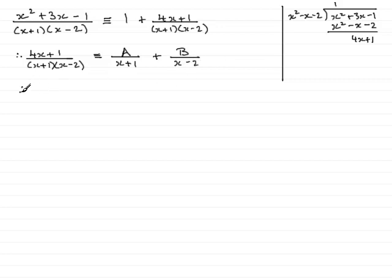And in the usual way, as we've discussed before, multiply both sides by x plus 1 times x minus 2, and that will give 4x plus 1 is equal to a times x minus 2, plus b times x plus 1.